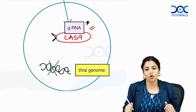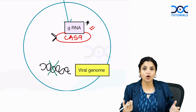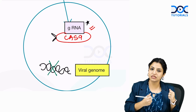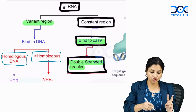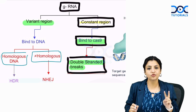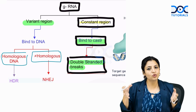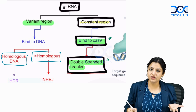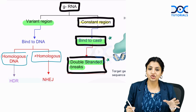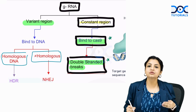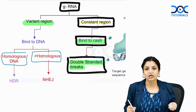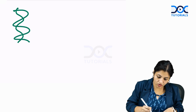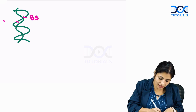Humans were excited by this and took the gRNA from bacteria. They made two regions: a constant region, which binds Cas9 and causes double-stranded breaks just like in bacteria, and a variable region which can be customized. For example, in sickle cell disease you can design the variable region to target the sickle cell gene on the beta-globin locus.